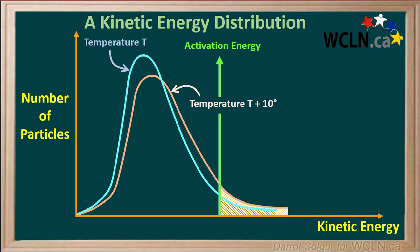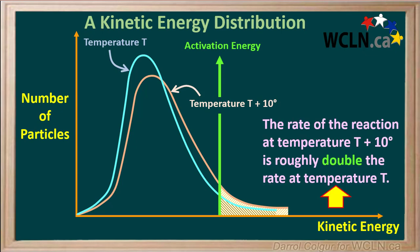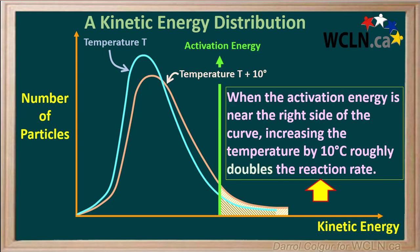Both areas are shown here. The area to the right of the activation energy under the orange curve is about twice the area under the blue curve. The result is the rate of the reaction at temperature T plus 10 degrees is roughly double the rate at temperature T. So the rule of thumb is: when the activation energy is near the right side of the curve, increasing the temperature by 10 degrees Celsius roughly doubles the reaction rate.